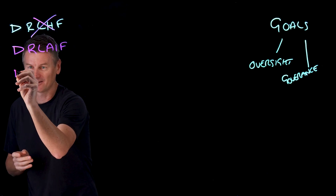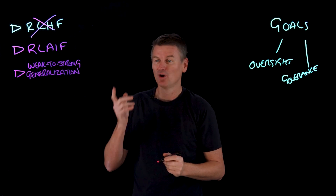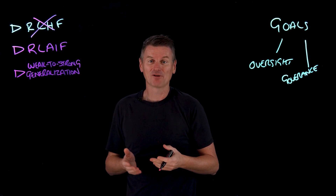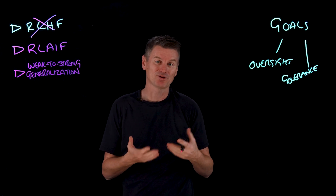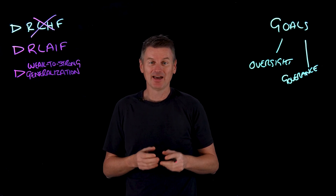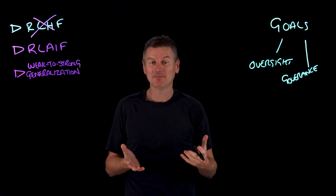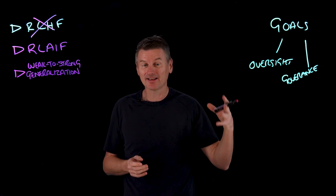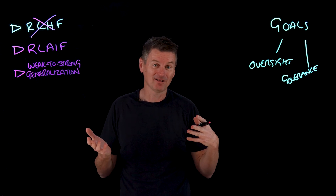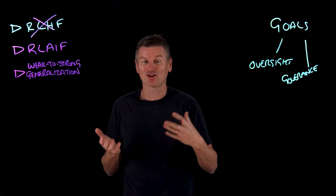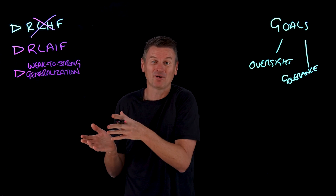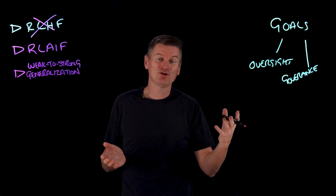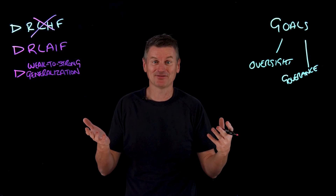There are other techniques as well. For example, weak-to-strong generalization, where a relatively weak model — perhaps one trained with human supervision — is used to generate pseudo-labels or training signals for a stronger model. The stronger model learns to generalize the patterns from the weaker model, and can then generate correct, secure solutions in situations the weaker model did not anticipate. Effectively, the stronger model learns to generalize beyond the limitations of its teacher.